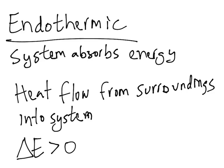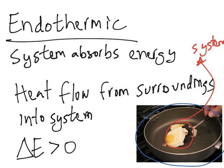This is also something people do every day. In this case, the egg is the system and the pan is our surroundings. So the egg is absorbing the energy from the surroundings to get cooked — that's why it's an endothermic process. So in an exothermic process the system releases energy, and in an endothermic process the system absorbs energy.